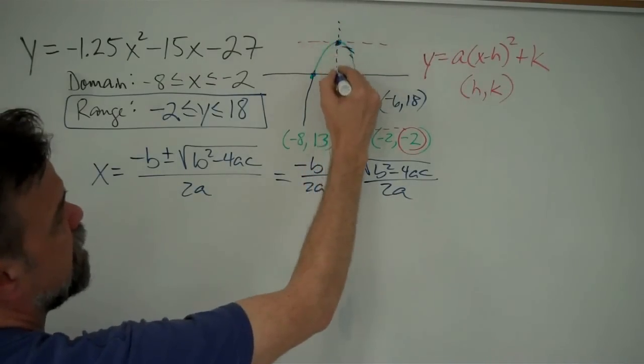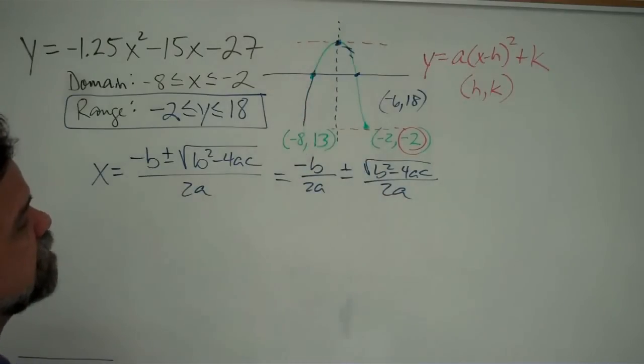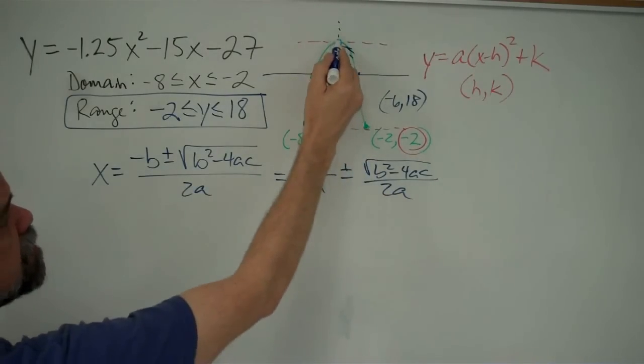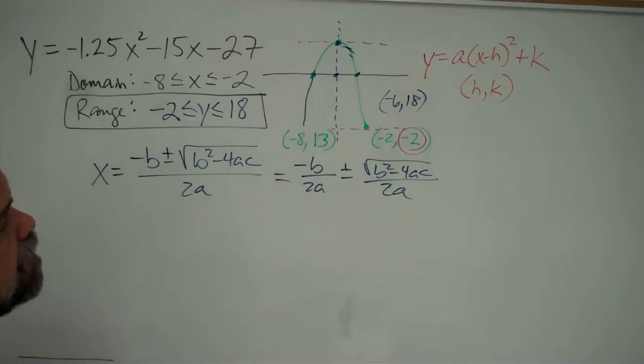Now, like I said, every parabola is symmetric. There's a line of symmetry going right smack down the middle here. And what you see is that the x-coordinate of the vertex is right in between the x-coordinates of those two x-intercepts.